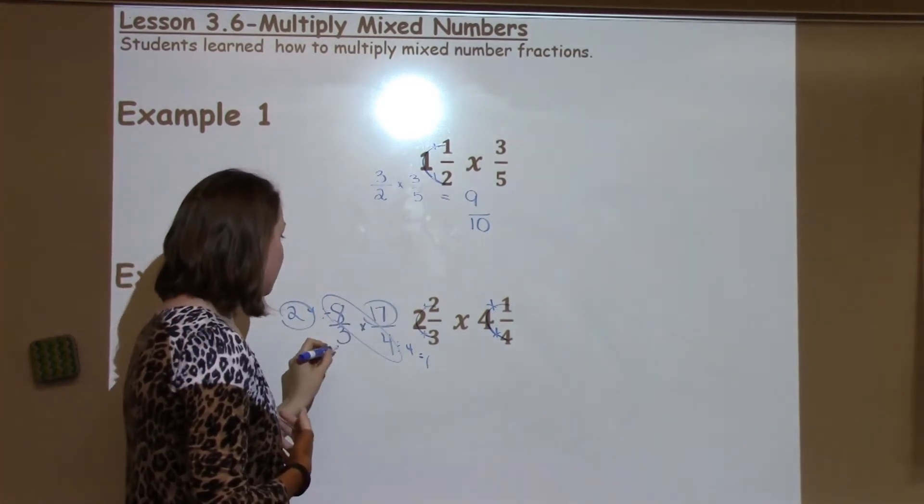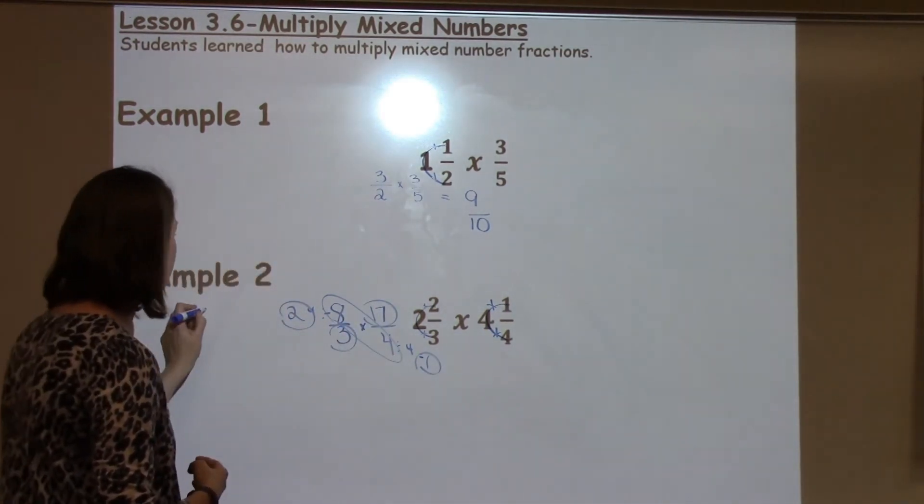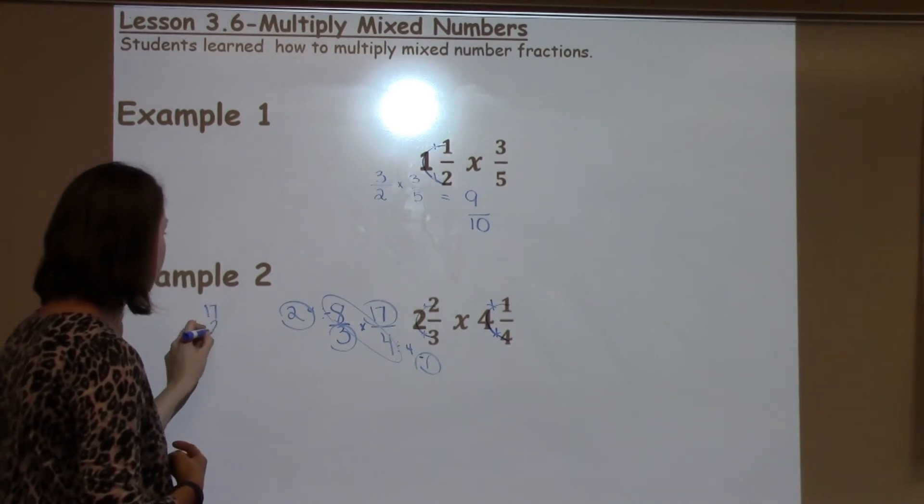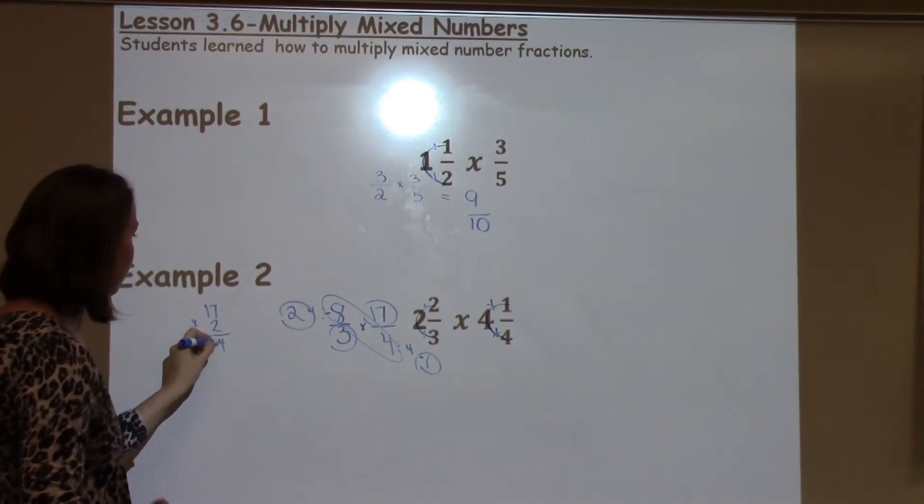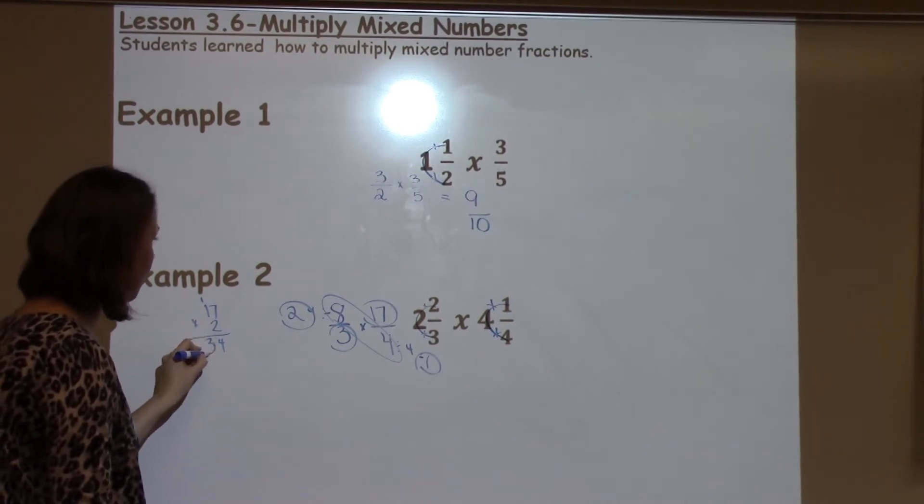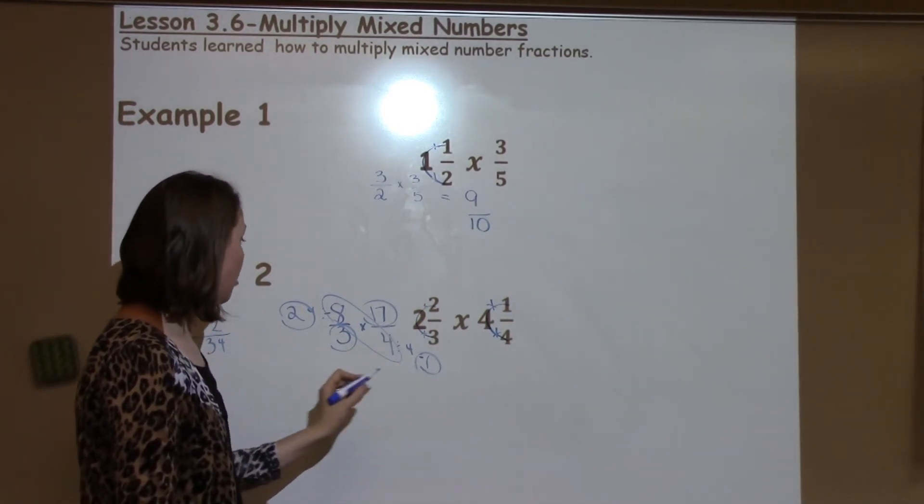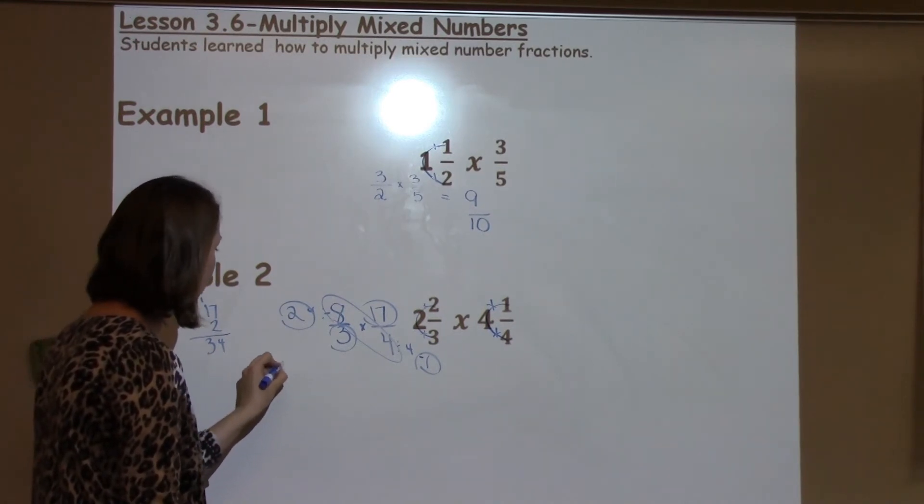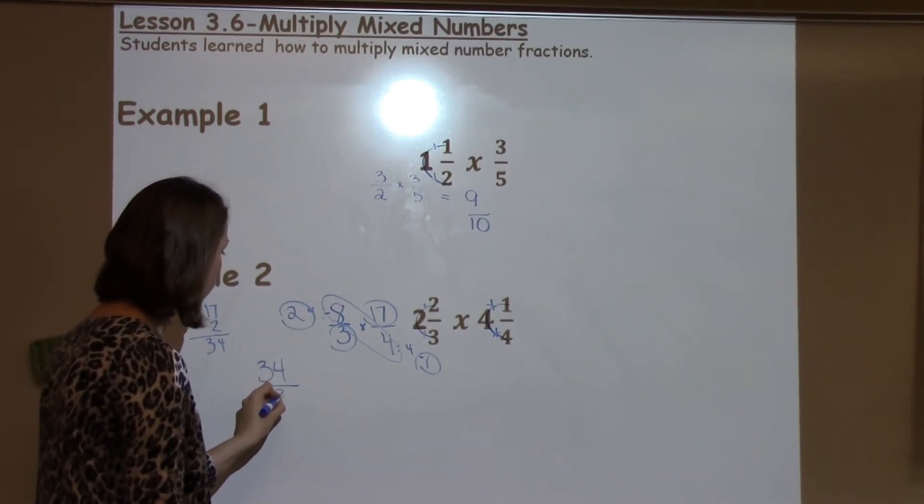I still need to use these numbers to multiply. So I have to take 17 times 2. 7 times 2 is 14, carry my 1. 1 times 2 is 2, plus 1 more is 3. And then I've got 3 times 1, which is 3. So I've got 34 over 3.